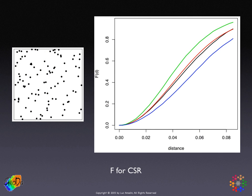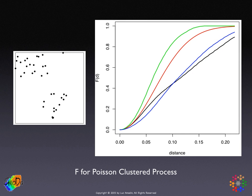We'll go through the same exercise with three patterns of known characteristics. For a random point pattern, the black line tracks the red theoretical line very closely and is clearly inside the randomization envelope — clearly a spatially random pattern. For a Poisson clustered process, the black line is always under the red line, suggesting clustering, though not under the envelope for the whole range of distances — still an indication of clustering at least for a range.